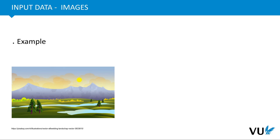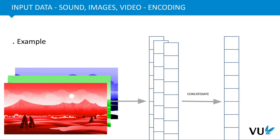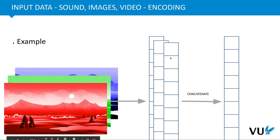Let's look at an example. We have an image, and we want to use it in our deep learning system. An image has a width, a height, and also colors. What we do is split those colors into so-called color channels. You've probably heard of RGB — red, green, blue — and we can separate the image into these three channels. For each channel, we look at the intensity of each pixel, encode that into a vector, and then concatenate all these vectors together to form one long vector representing the image.